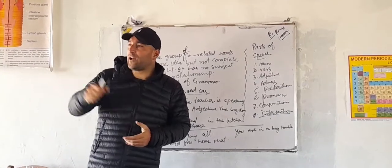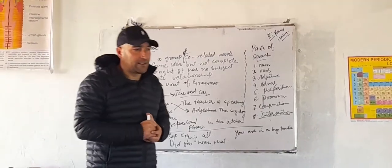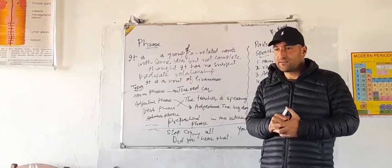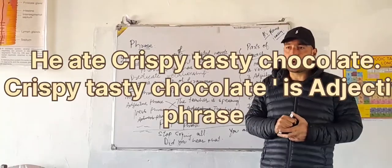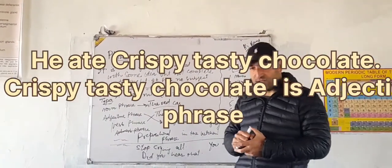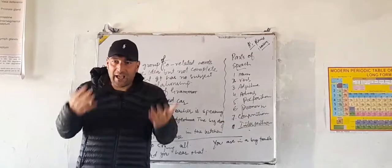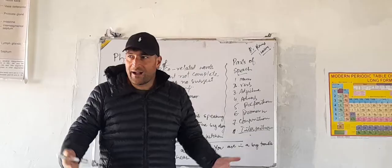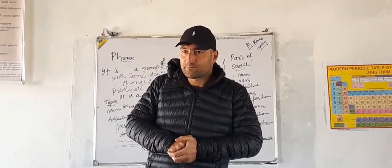Yes, what do you say? It's simple. Sun rises in the east is a sentence. In the east is a phrase. He ate crispy tasty chocolate. This is a phrase, crispy tasty. This is a phrase.